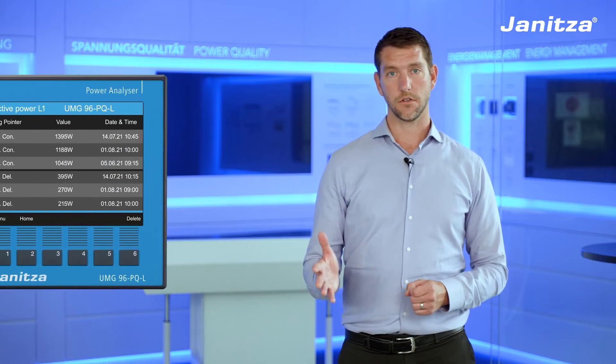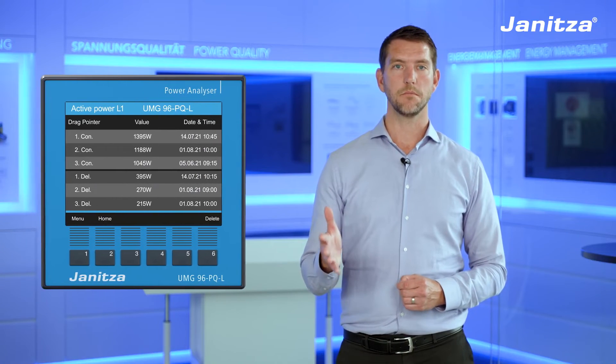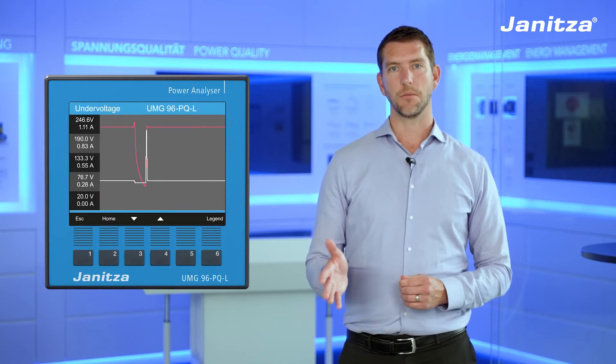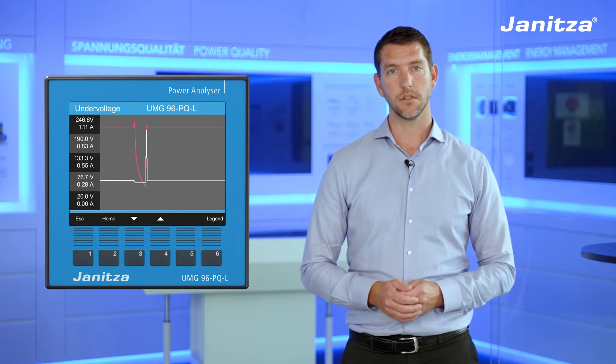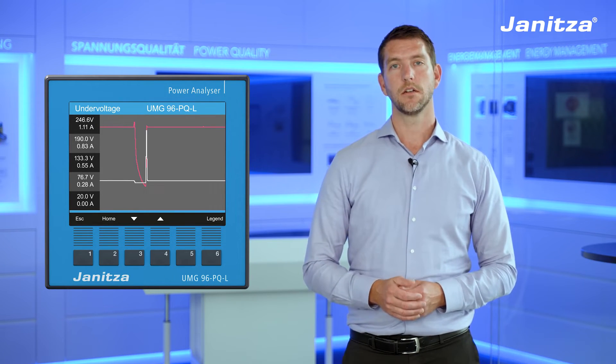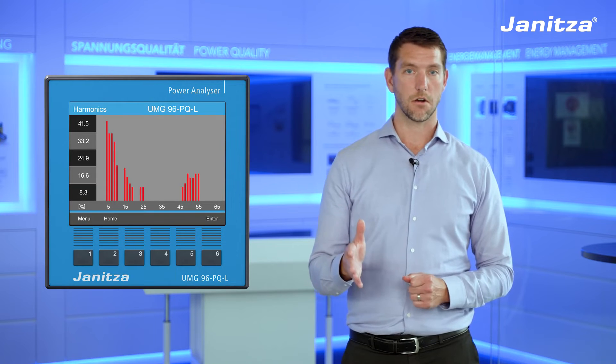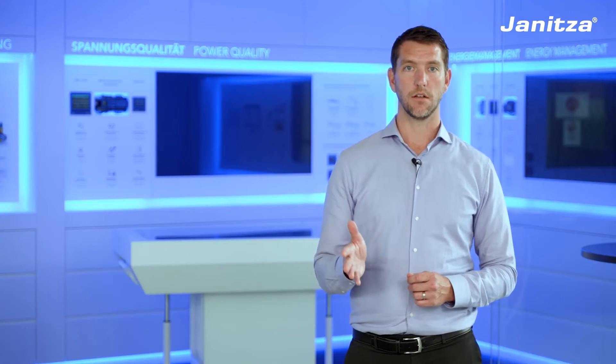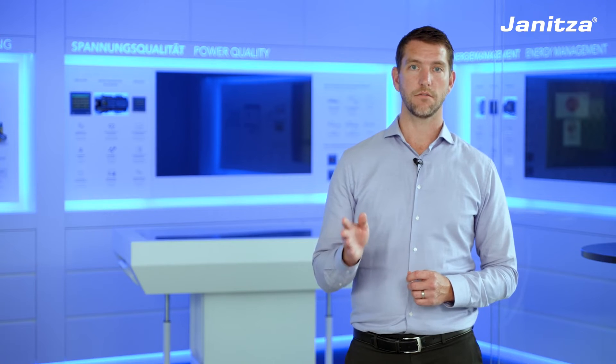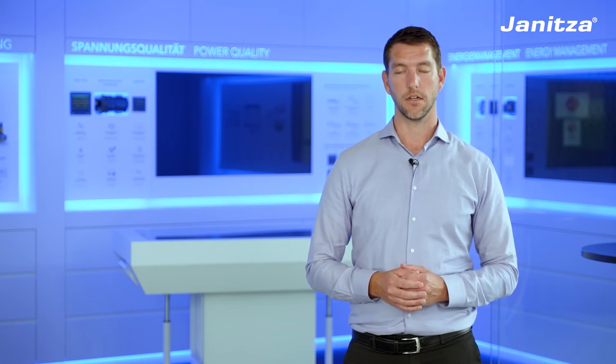For the advanced users, there is a peak demand indicator, event capturing when events are longer than 20 milliseconds, harmonic measurements up to the 65th, and interharmonics. It has an EMC class B rating, which means it can be used in multiple industrial, commercial, and residential zones. The Ethernet interface allows up to five software applications to run in parallel.